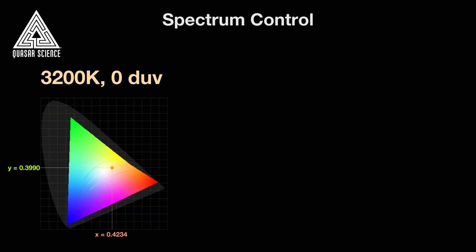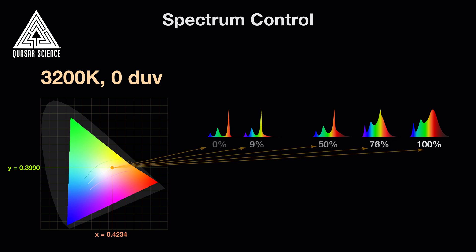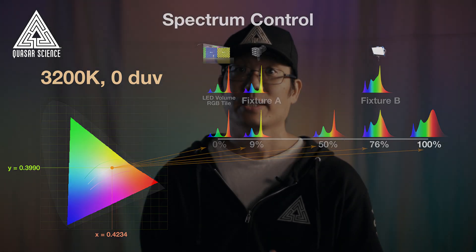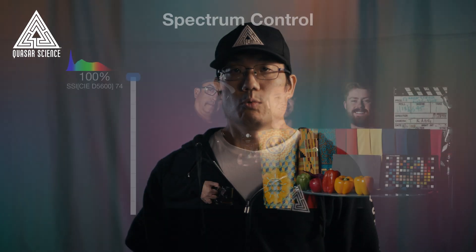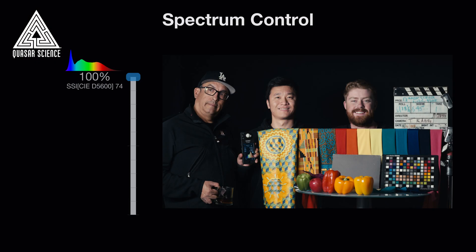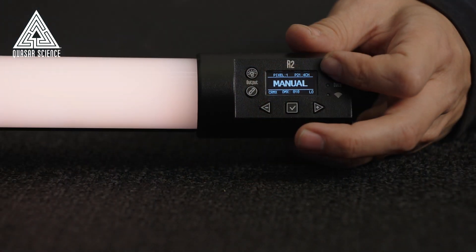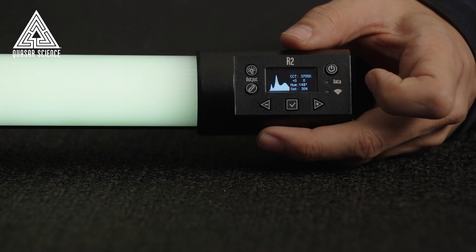What if you don't want the fullest possible spectrum? What if you want a bad spectrum? Our industry-first spectral control feature grants you the full ability to choose the spectrum of any color point that the RGBX LEDs can produce with a single parameter. 100% gives the optimal spectral fingerprint and 0% gives the spikiest RGB-only spectral fingerprint. If you don't have a fancy spectrometer to dial this in, the onboard manual status screen provides live visual feedback of the colors, spectral fingerprint, and its colorimetric parameters.